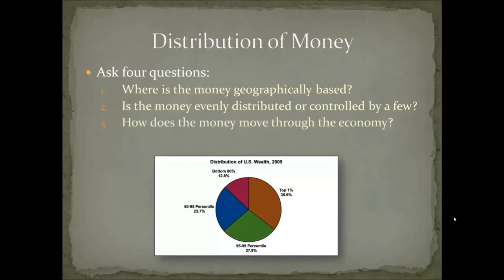How does the money move through the economy? This is another very important question about distribution. Generally speaking, if your money is moving very slowly, this is a signal of a recession and impediments to effective trade — meaning exchange is not happening well. If your money is moving very quickly, this is an indication of a booming economy. Economists measure the movement of money through an economy and have developed many metrics to assess that, which are beyond the scope of this class.